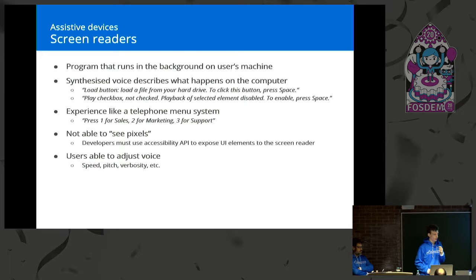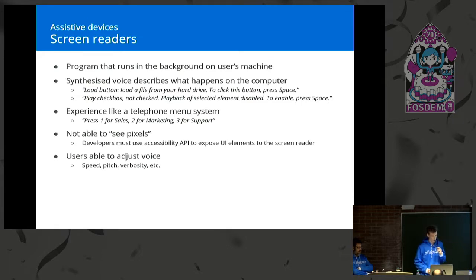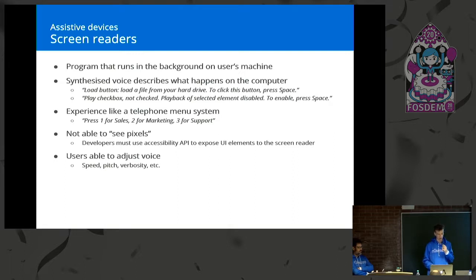The experience of using a screen reader is a bit like using a telephone menu system — press one for sales, two for marketing — in the sense that the blind person, because they can't see, has to listen to all of the options before they know what to do, and they have to keep a mental map of what options are available. When programming for a screen reader, the screen reader is not able to see pixels, so it's up to the developer to tell it what elements are on screen. But you don't tell it what to say — you tell it what's there, and the screen reader works out what to do, allowing users to adjust settings like speed, pitch, and verbosity.